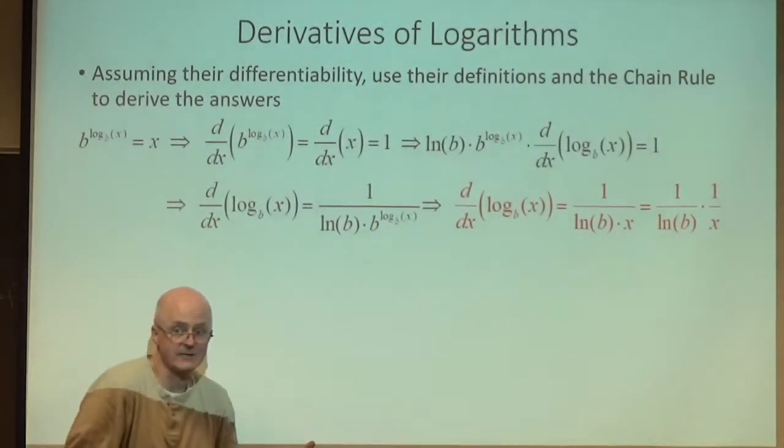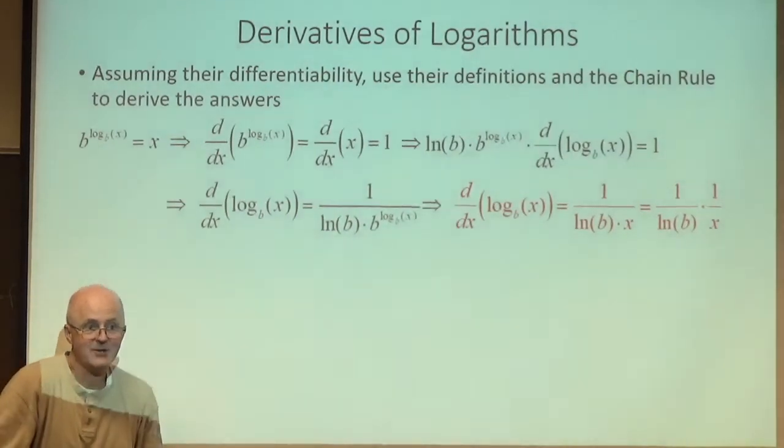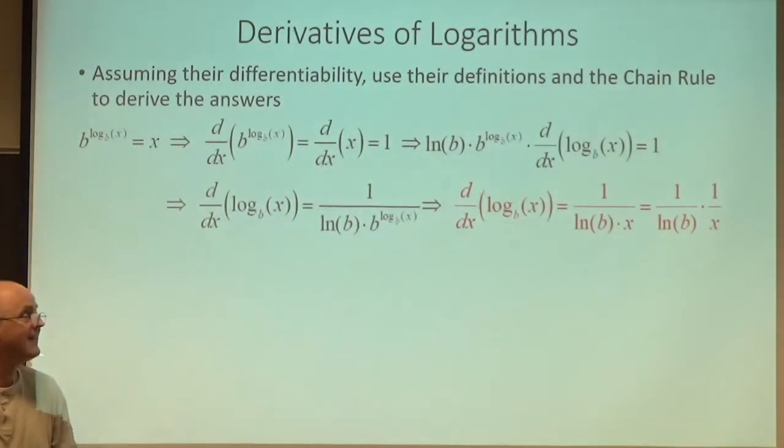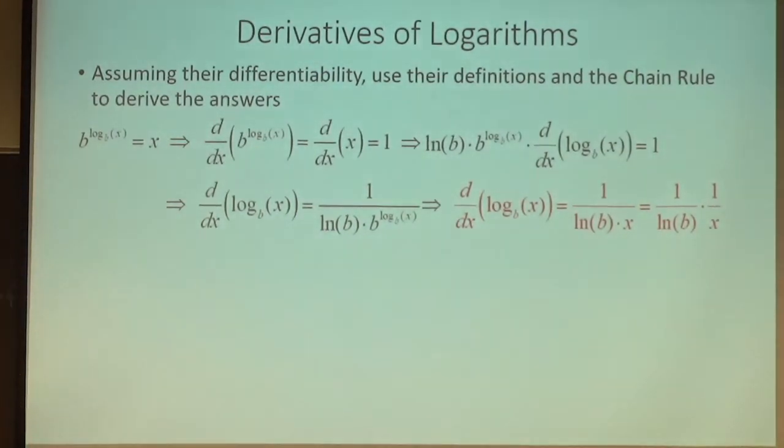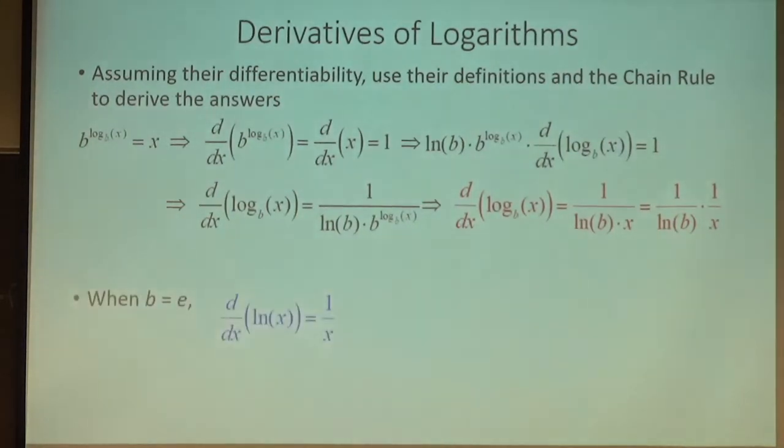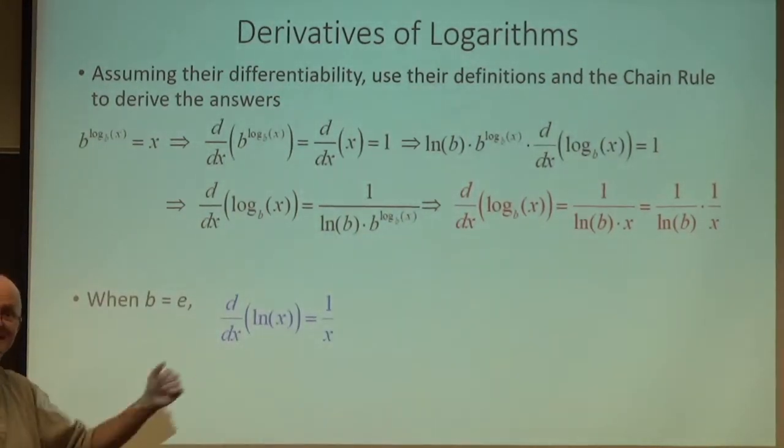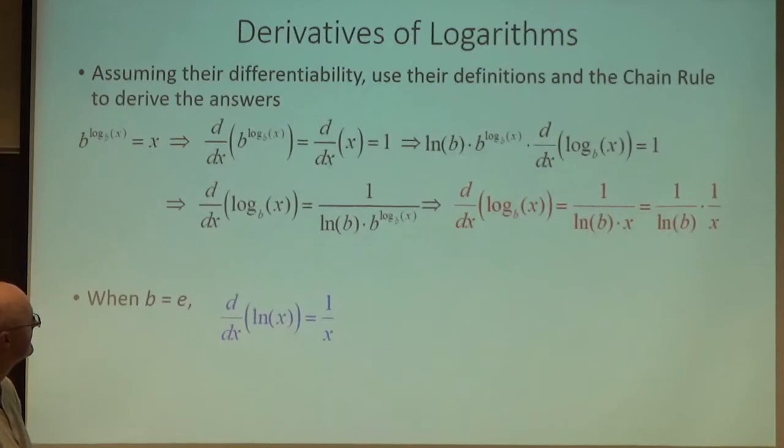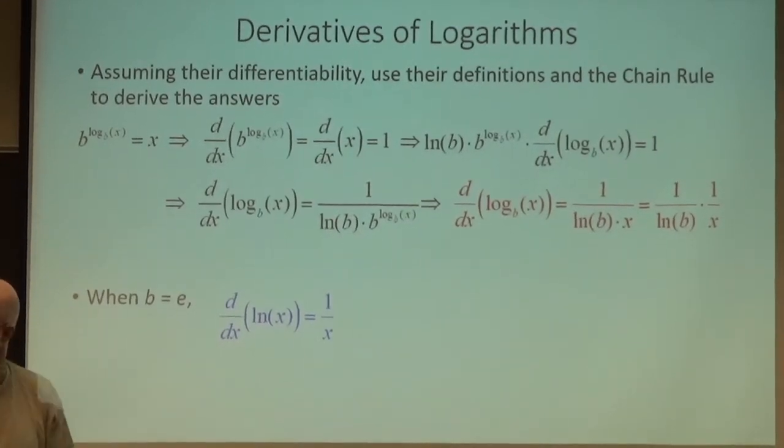And lo and behold, if b equals e, natural log of e is one. Then natural log goes away. And you just get one over x, nice and simple. Isn't that amazing? The derivative of natural log of x is one over x. And here you can check it graphically as well.